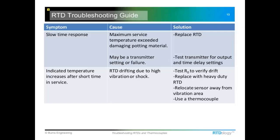Transmitters — especially new programmable types — often have a setting for a measurement delay. The default is typically one second, but you can set it up to 60 seconds or even longer. Some wireless ones have even longer range settings where it will just delay taking a reading from the temperature probe. So that can cause what appears to be a slow response problem.